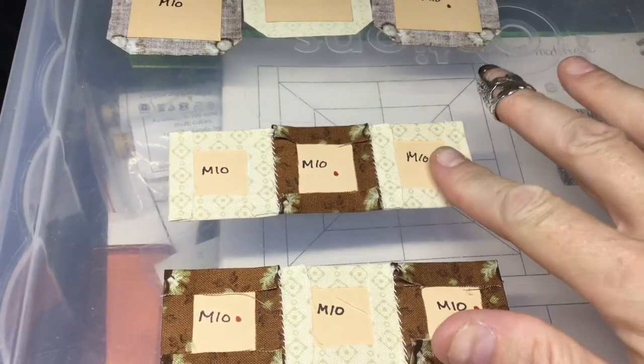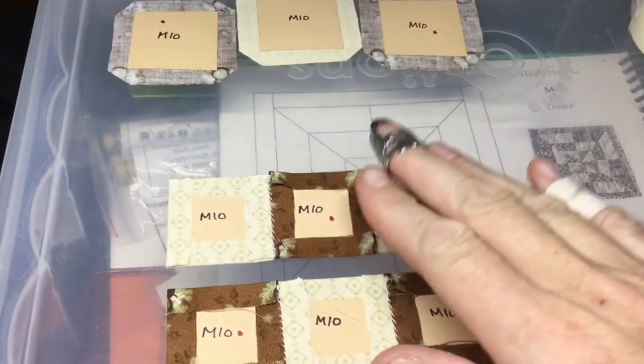So I've got the second row assembled, and now it's a matter of attaching it to the bottom row.